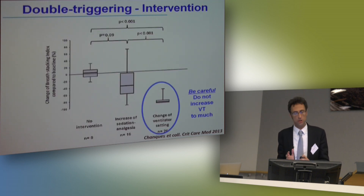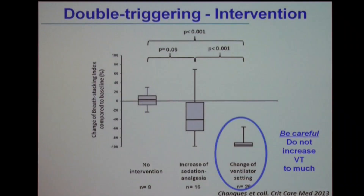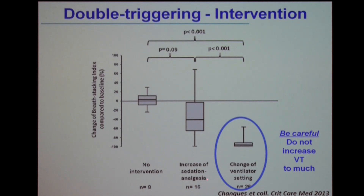This is the very interesting work from Gerald Chang. They included patients with a high level of double triggering, and the physician had three options. First, doing nothing — and as expected, nothing happened; it did not lower the proportion of double triggering. Second, increasing sedation and analgesia — this actually lowered the proportion of double triggering. Third, improving the ventilator settings — which was the most efficient option in lowering the rate of double triggering.